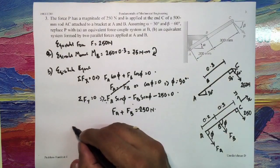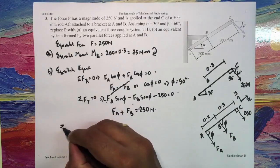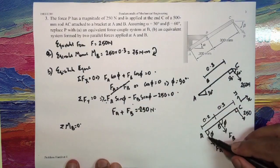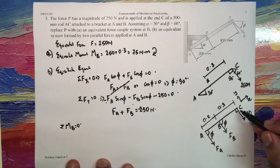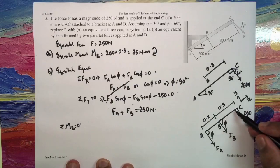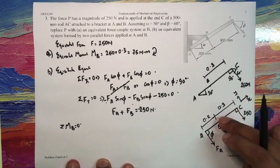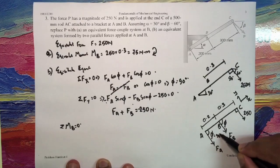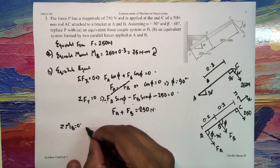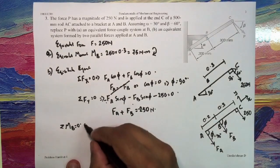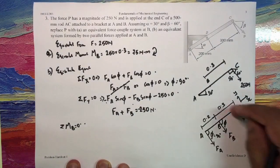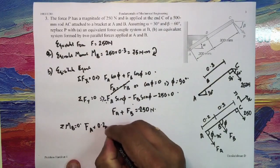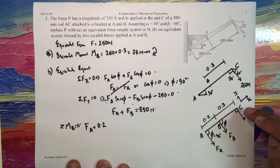Now let us consider the moment about the point B: sigma MB should be equal to 0. In that case, what I would get: I would get FA into 0.2 and this 250 into 0.3. These are the two forces which are acting and creating a moment about point B. And it is interesting to note phi has become 90 degrees, so I have directly FA into 0.2, and how does it try to rotate about point B? Anti-clockwise direction. So I have FA into 0.2, that is in the anti-clockwise direction.